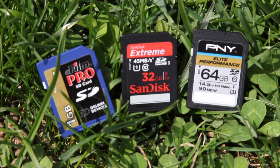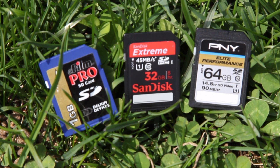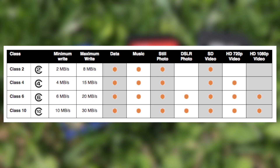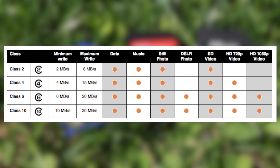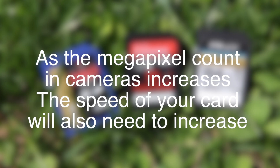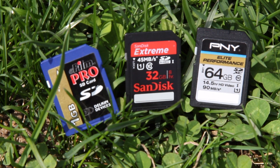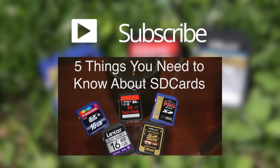Next up, I'm going to be talking about SD card class ratings. SD card class ratings were originally created to make the average person be able to understand which SD card would work best with their camera. As the megapixel count in modern digital cameras keeps rising, so will the speed of your SD cards need to keep rising also. When you're buying an SD card, make sure that it is the fastest SD card available for your camera.